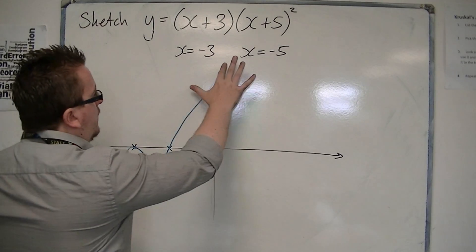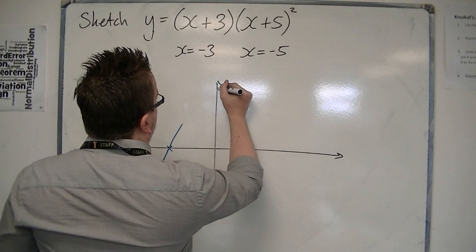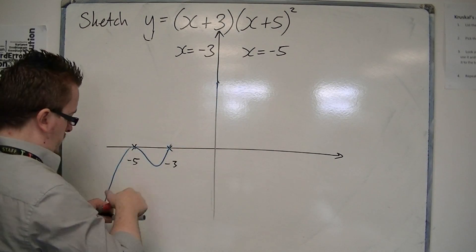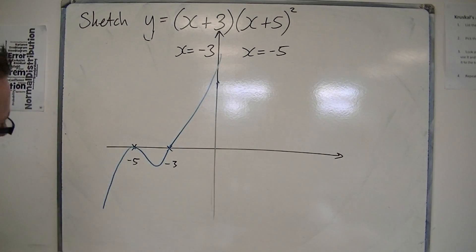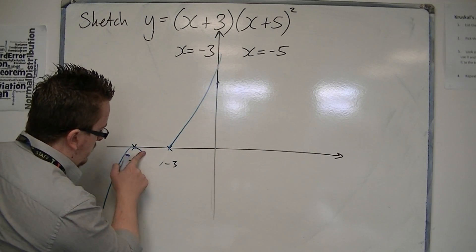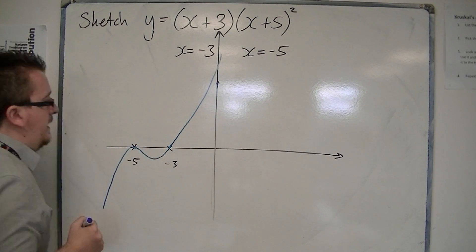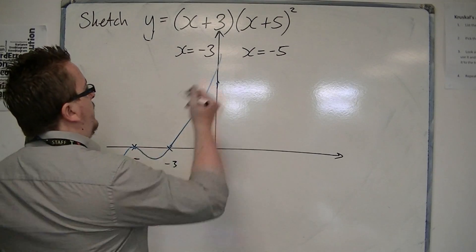I haven't drawn this very well, because it kind of goes back on itself. Let me just try that again, because I need the y-axis to be a little bit bigger. Going through minus 3, still not very good. It's just so I need to get it crossing the y-axis.